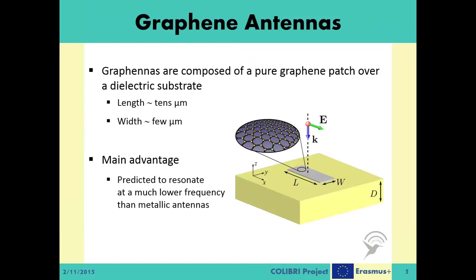Graphene antennas, or graphennas for short, are composed of a pure graphene patch over a dielectric substrate. For these antennas, the radiation frequency does not increase as much as the size of the antenna decreases. This is the main advantage of using graphennas over metallic antennas.